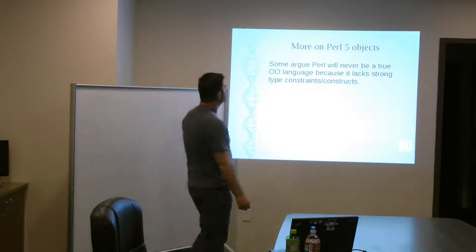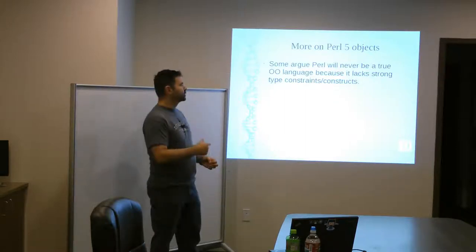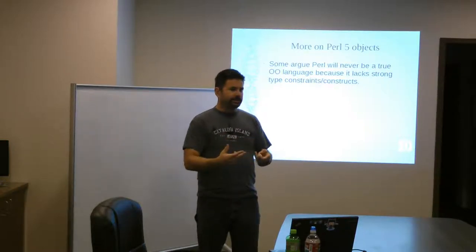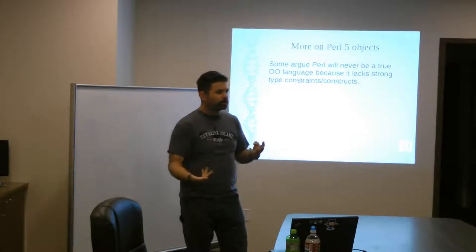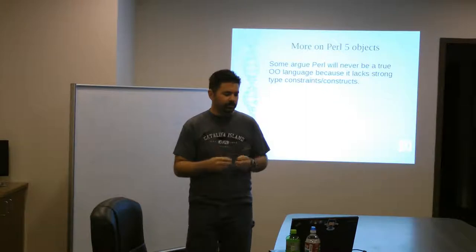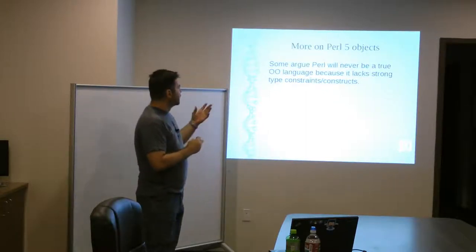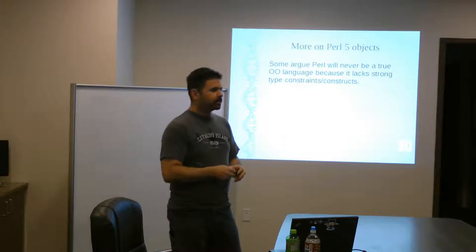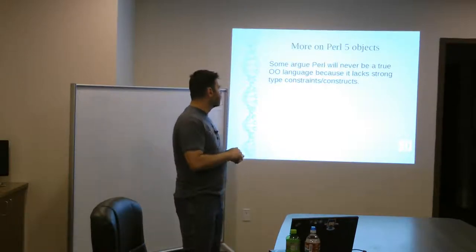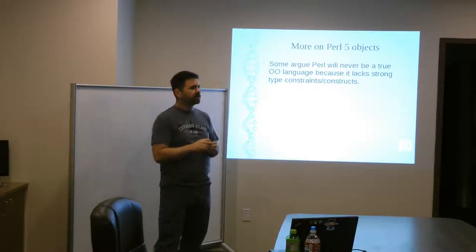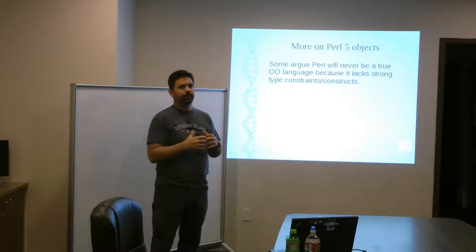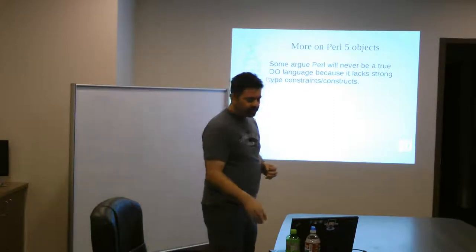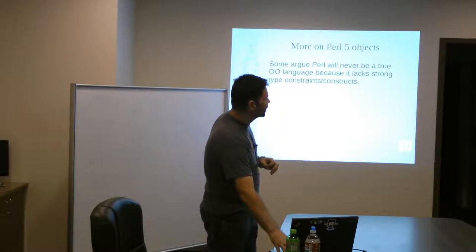Some people argue that Perl will never be a true object-oriented language because it lacks strong type constraints. It's not a strongly typed language. I mean, types in Perl are scalar, list, hash, and a reference to one of those, or a glob, or a file handle, that sort of thing. You have scalar references. But there's, you know, Perl by itself natively doesn't give you the ability to say, oh, this is a floating point, this is a character or a character string, or this is an integer. That's one thing that most object-oriented languages have because they will allow you to call a method different ways based on the types of data that you give to it. So that's one thing that Perl lacks. But there are some ways around that that you can make up for that.